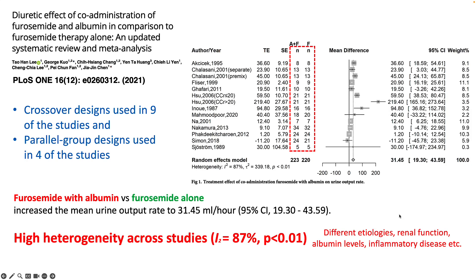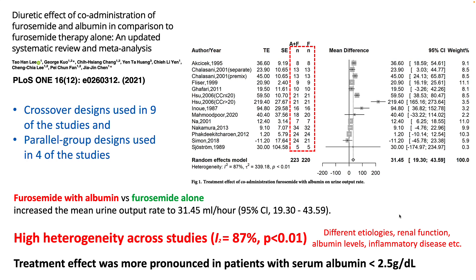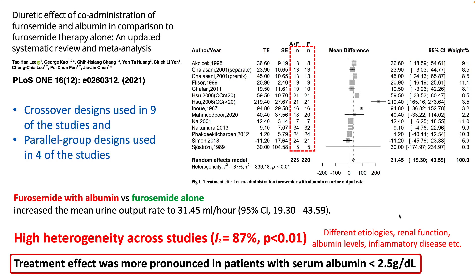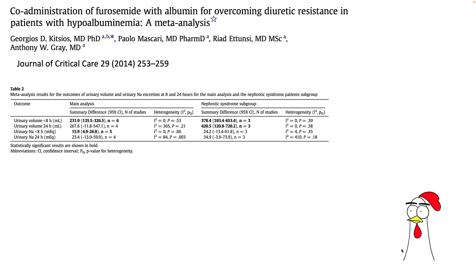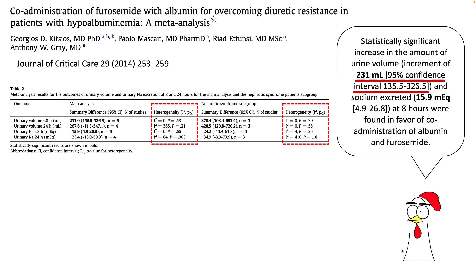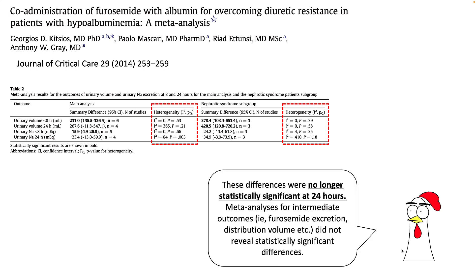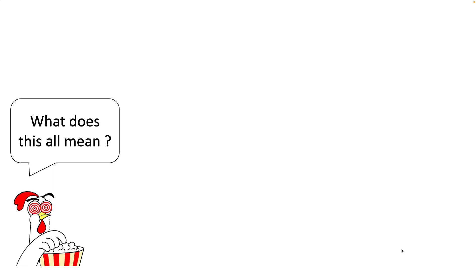The study sizes in all these studies were very small. One of the strongest effects observed was that the treatment effect was most pronounced in patients with serum albumin less than 2.5. Another meta-analysis published in the Journal of Critical Care had better heterogeneity and also found increased urine volume and sodium excreted when albumin was used with furosemide, however this effect was only limited to the first eight hours.